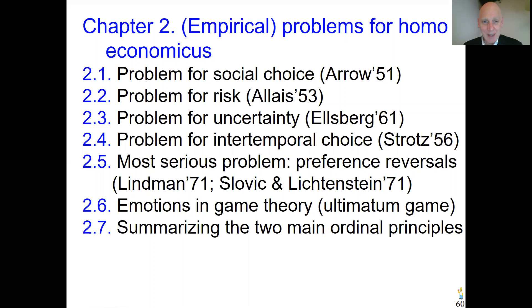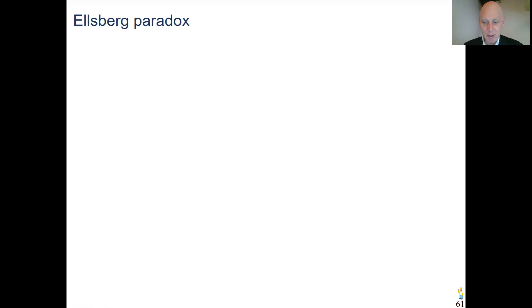In the previous chapter, you heard all kinds of good results for the classical approach. Now you have one problem after the other. The next one coming is a problem for decision-making and uncertainty by Ellsberg 1961.